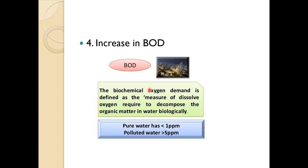Then there is an increase in BOD. What is BOD? BOD is biochemical oxygen demand — a measure of dissolved oxygen required to decompose organic matter in water biologically. Pure water has less than 1 ppm BOD, and polluted water requires more than 5 ppm BOD. Basically, oxygen freshens the water and helps decompose organic matter. If BOD gets increased, it means demand is increased because of pollution. Consumption of oxygen is more in the case of polluted water.